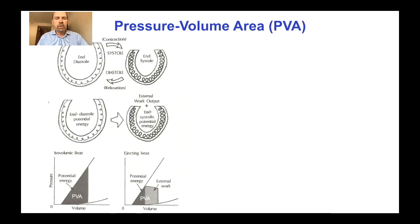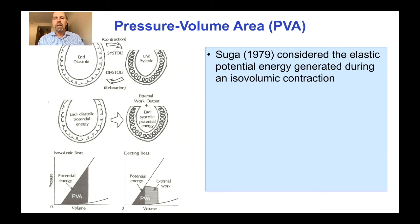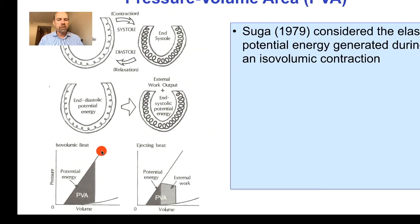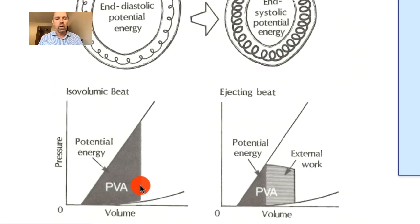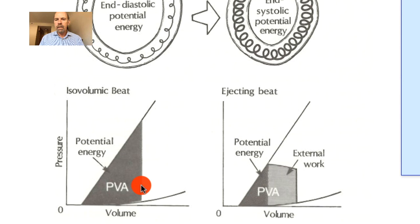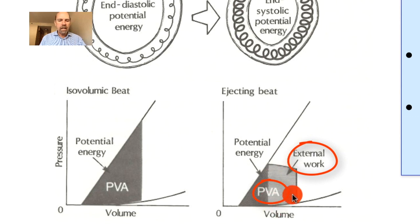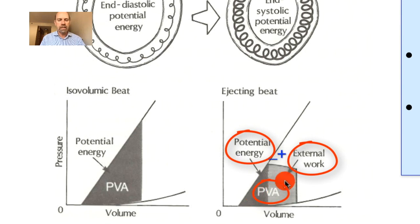In the 1970s, Suga was interested in the relationship between myocardial oxygen consumption and the work done by the heart during contraction. He realized that there was an elastic potential energy generated by the heart during an isovolumic contraction — a contraction in which volume was clamped and the heart couldn't actually eject anything, so it was doing no external work but was still expending mechanical energy. He recognized that this pressure development required metabolic energy even though it did no external work and must instead be dissipated as heat. He therefore defined the pressure-volume area (PVA) as the sum of the external work and this potential energy associated with an isovolumic contraction — specifically, the PVA is the external work loop plus the potential energy triangle.